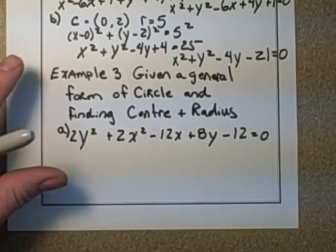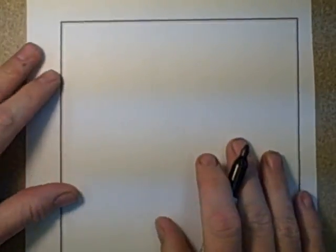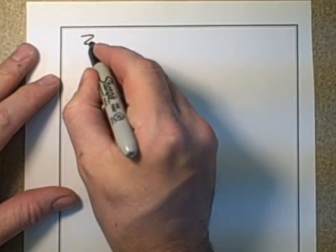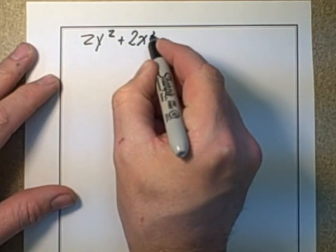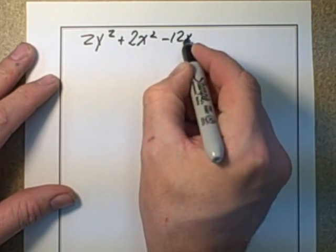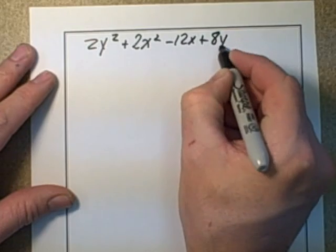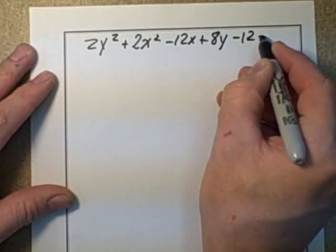So I'm going to put this on a fresh piece because this is a longer type question. So the question was again: 2y squared plus 2x squared minus 12x plus 8y minus 12 equals 0.